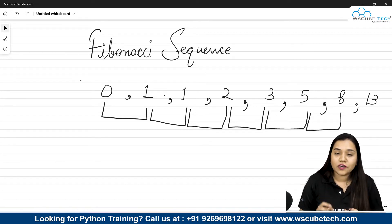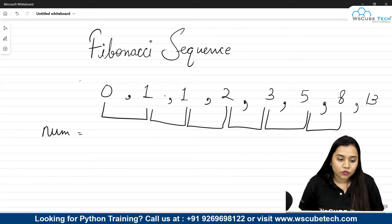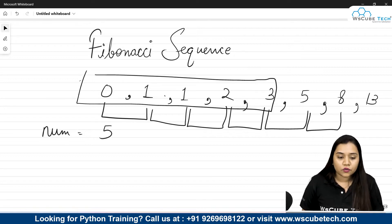Now what we need to do? We need to write a program to obtain this sequence up to a certain number. For a number we will be taking the input from the user, that number is equal to let's say 5, that I want to obtain a sequence up to 5 numbers. That means up to here.